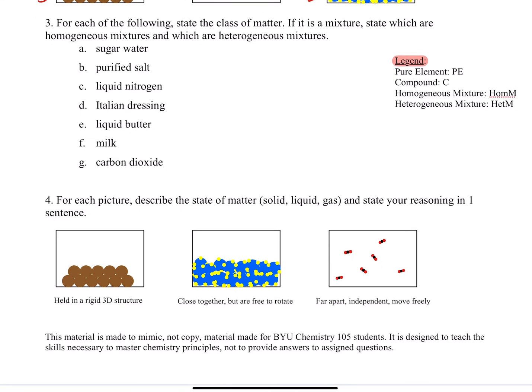Number three, for each of the following, state the class of matter. If it is a mixture, state which are homogenous mixtures and which are heterogeneous. And we'll get into those differences here as we look at these examples. So sugar water - sugar is a compound, and water is a compound. We usually just dissolve sugar in water.